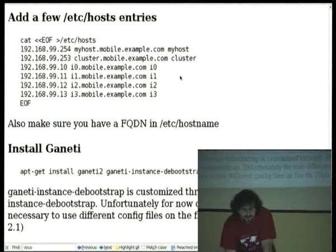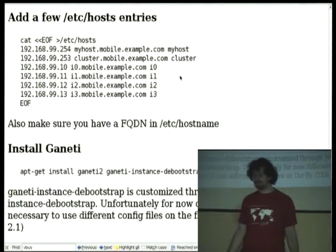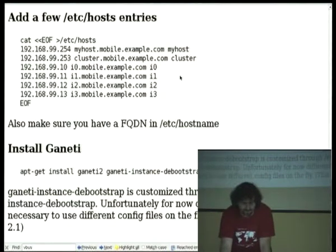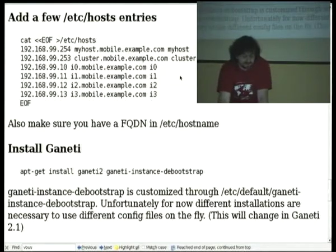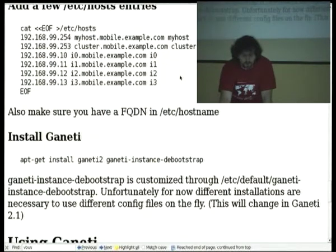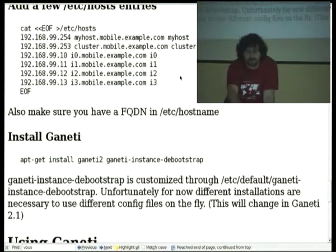You also want to masquerade your traffic, and this way the instances can access the internet but the internet cannot access them. You would need DNS implementation and things, so you just add a few /etc/hosts entries and everything works. You want one for your host — we gave it IP 254 — then one for the cluster, and one IP per instance. Ganeti doesn't like it if your /etc/hostname contains only your local handle like 'myhost' — it probably wants your whole myhost.mobile.example.com, so just give it that and it will work happily.